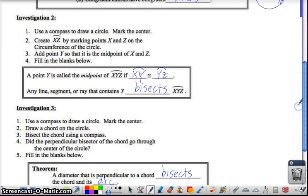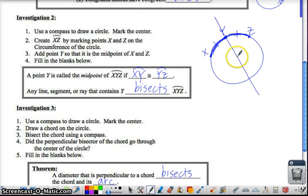Moving down to Investigation 2, if you already did that, or if you want to stop and do that one, then you can figure this out after, or if you already did it, then you can see the answers now. So a point Y is called the midpoint of arc XYZ. So if you have an X, a Y, and a Z, point Y is the midpoint if arc XY is congruent to arc YZ. I don't really think you can put those marks like that, but we know them from segments. So therefore, any line, segment, or ray that contains Y bisects XYZ. So if I have a line that goes through, that means it's going to bisect arc XYZ.